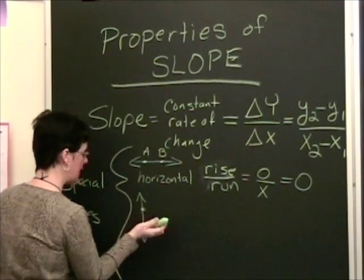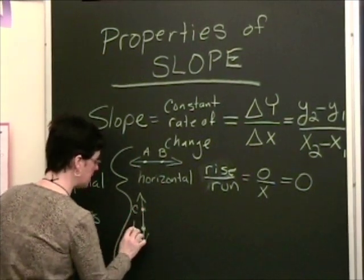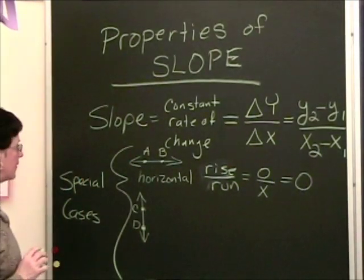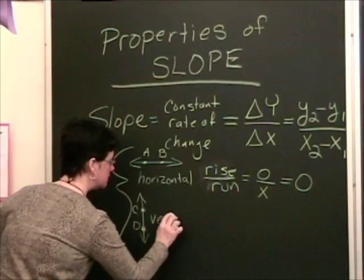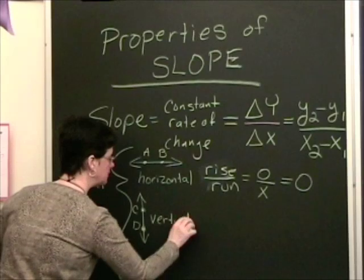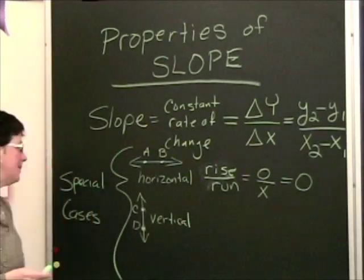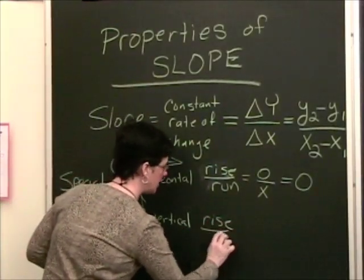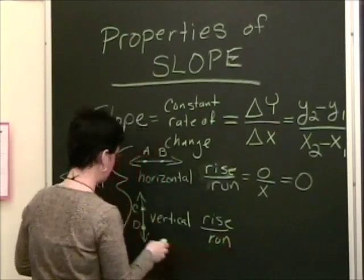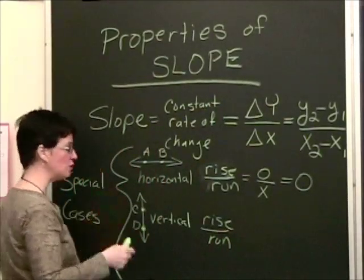Maybe vertical line, and once again, we'll put two points on it. We'll put c and d. And we're going to go ahead and write vertical. Once again, let's compare the amount of rise to the amount of run on a vertical line between two points.